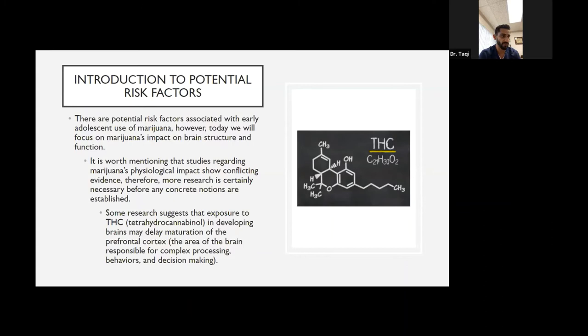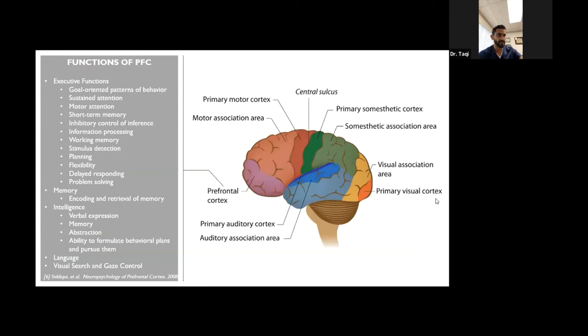Some research suggests that the exposure to THC in developing brains may delay the maturation of the prefrontal cortex. This is a picture of the brain. As you can see the purple and the red part is the front, the orange part, the primary visual cortex is at the back. The prefrontal cortex, as you can see, occupies a major portion of the brain and it's associated with goal-oriented patterns of behavior, sustained attention, motor retention, short-term memory, inhibitory control of interference, information processing, working memory, stimulus detection, planning, flexibility, delay learning, problem solving. It also participates in the memory, including retrieval. It also participates in the intelligence of both verbal expression, memory, abstraction, ability to formulate behavioral patterns and pursue them, language, visual search and the gaze control, meaning the control of the eye movement.